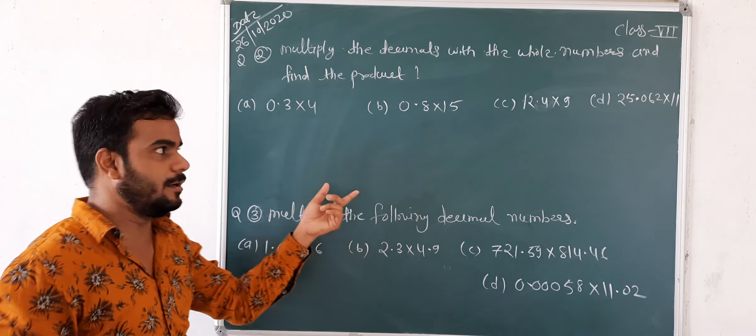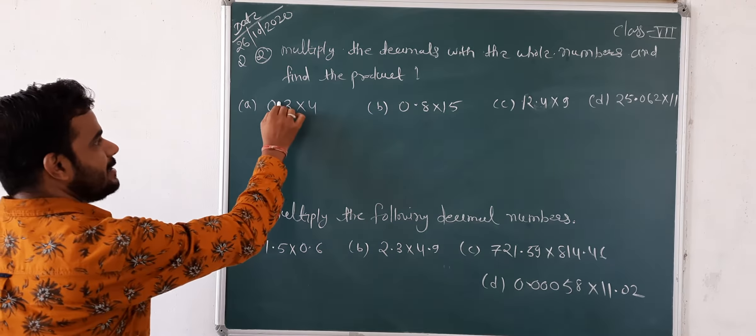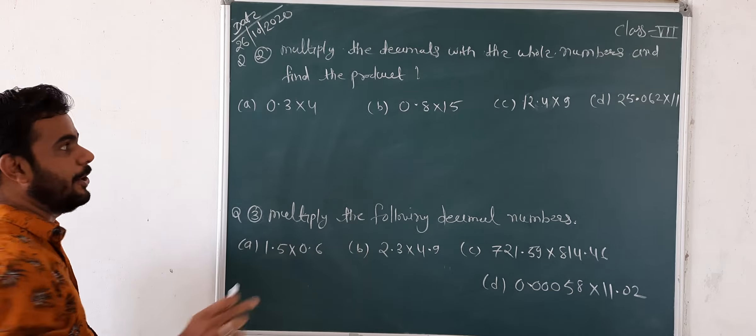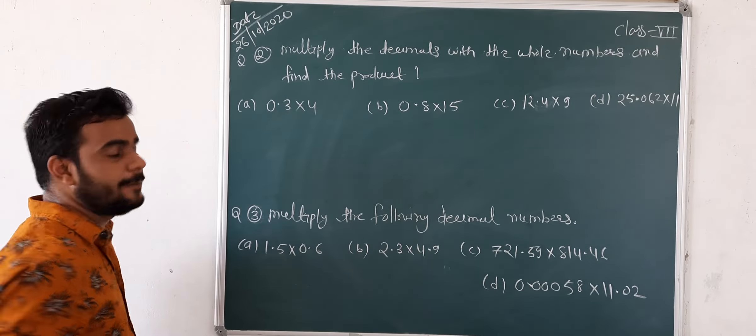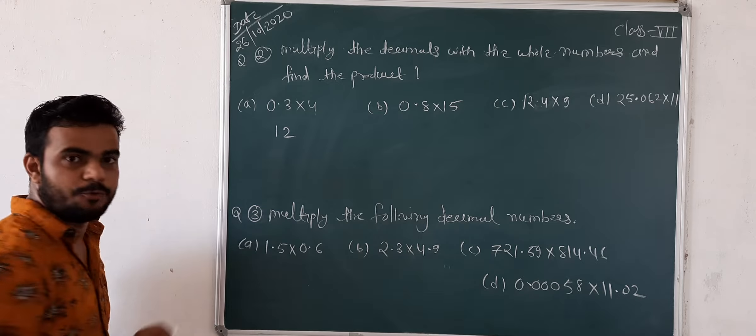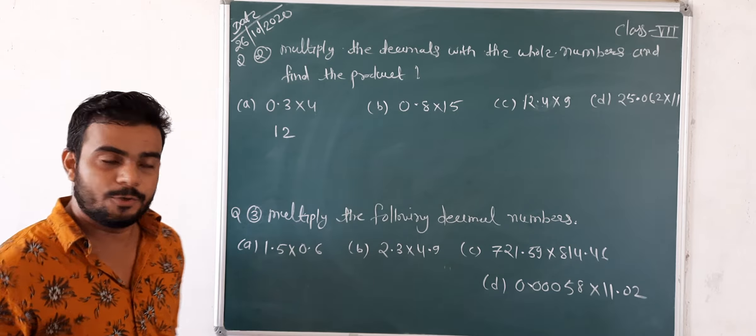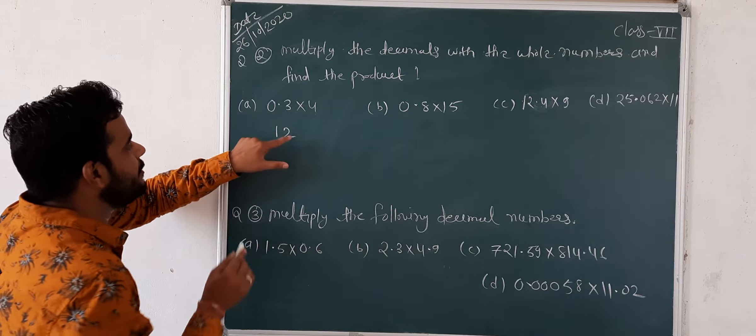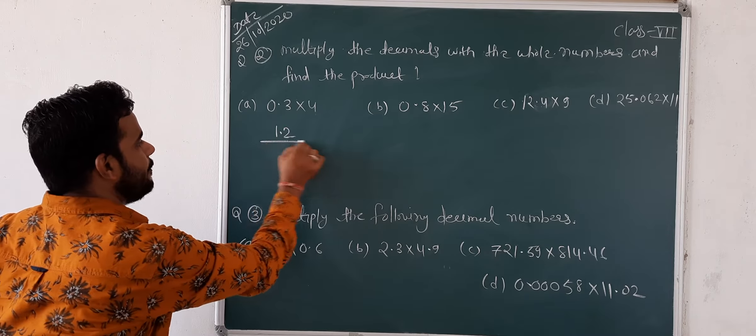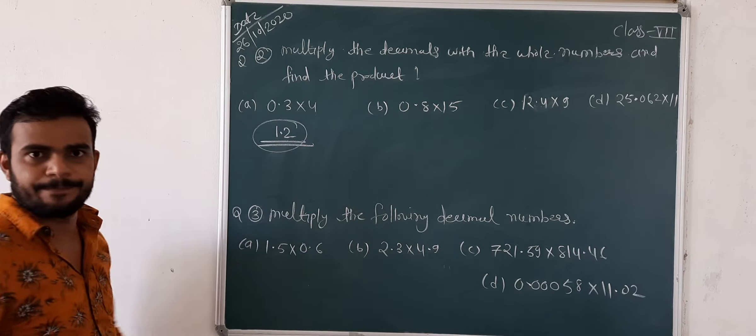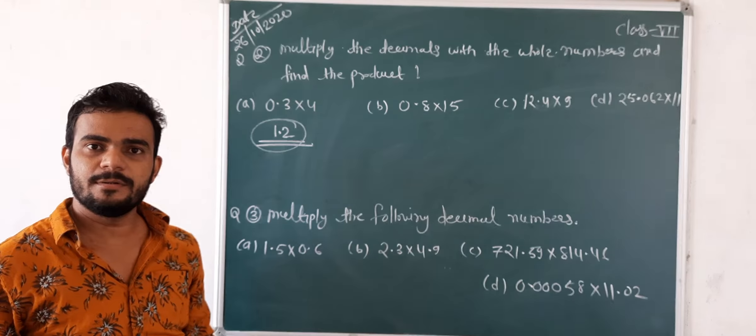Next question number second and third, both are same. Multiply the decimal number with the whole number and find the product. The different thing is here one number is decimal and second number is whole. Four is the whole number, fifteen is the whole number, nine and eleven. The way is same, but just see how to do.